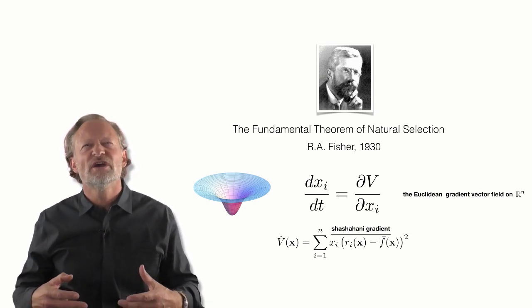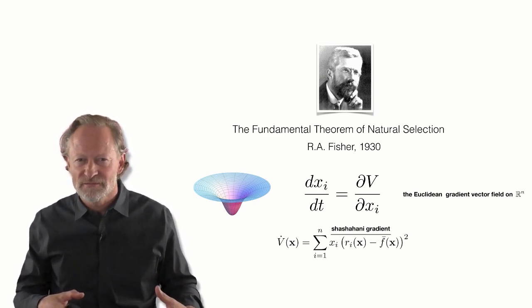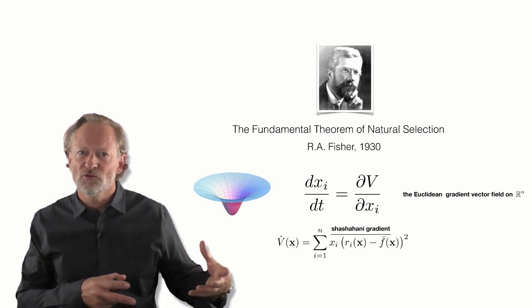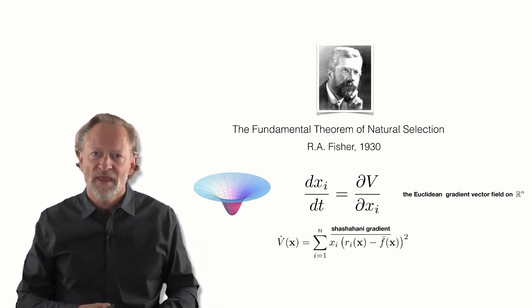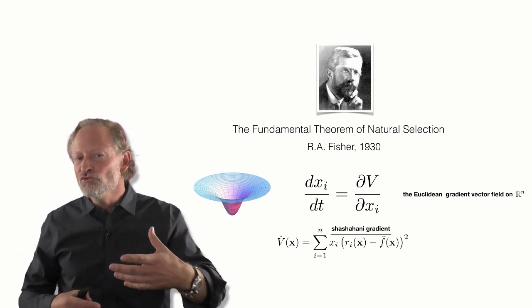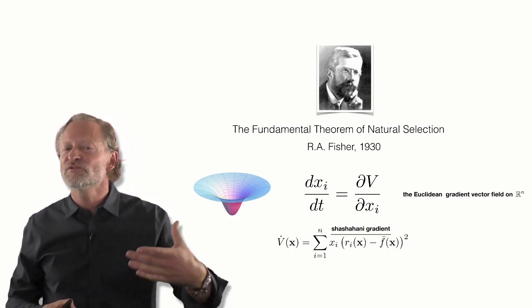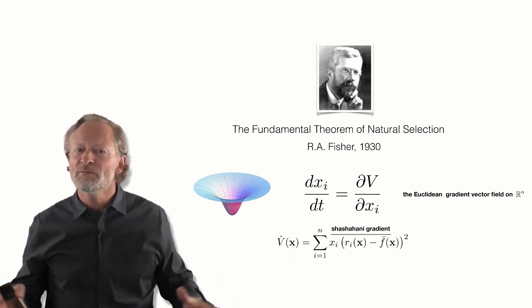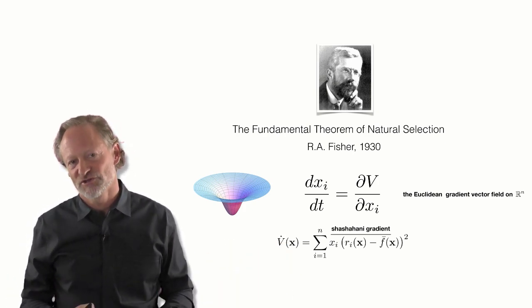And Fisher wanted a theory as general as the second law of thermodynamics. And here it's captured in mathematical terms. And it says you move through a space of possible solutions in such a way that you minimize the variability in a population.